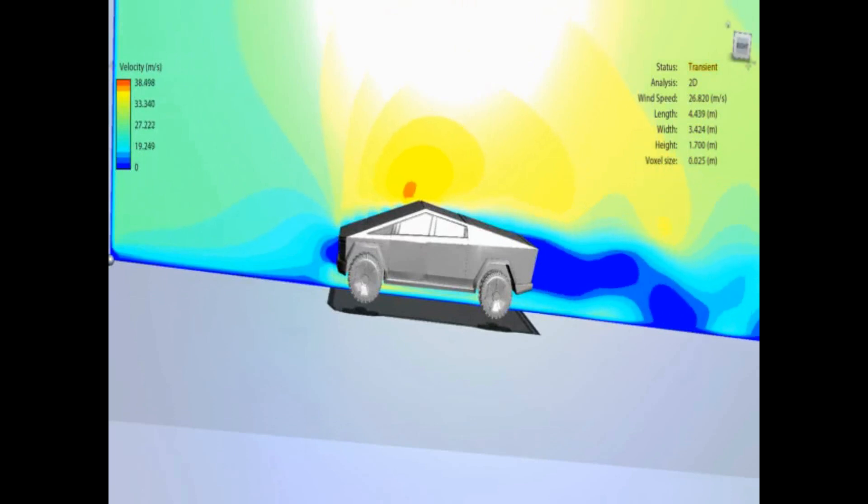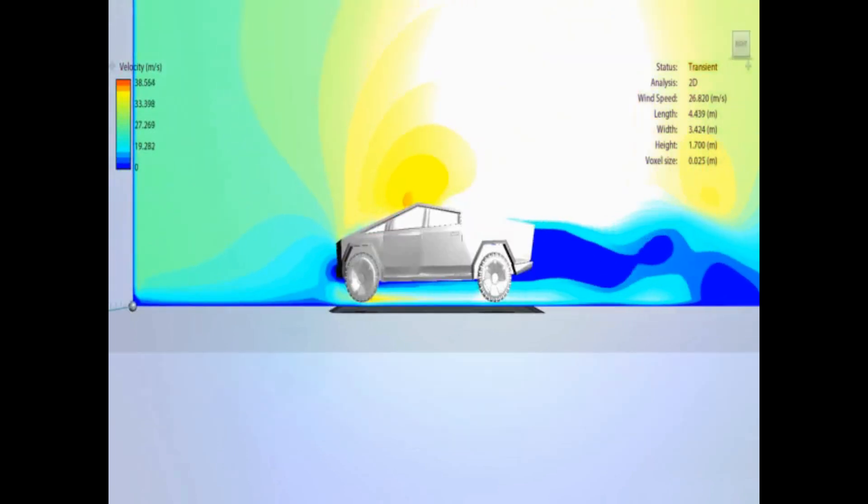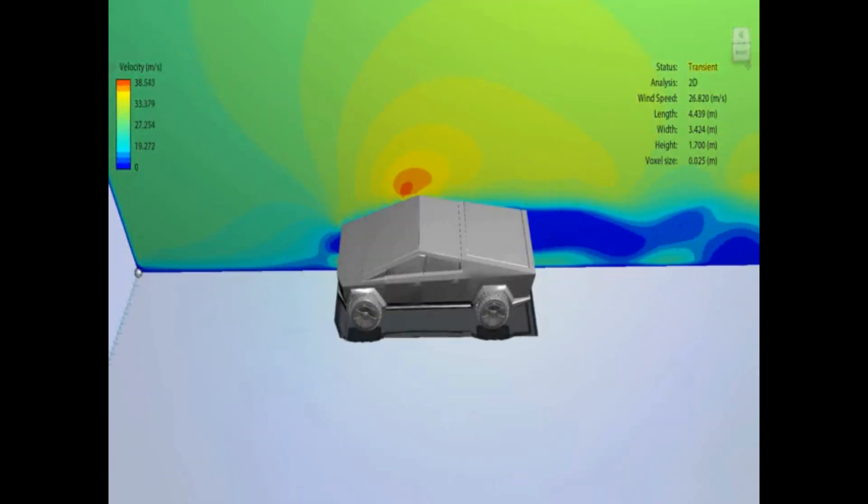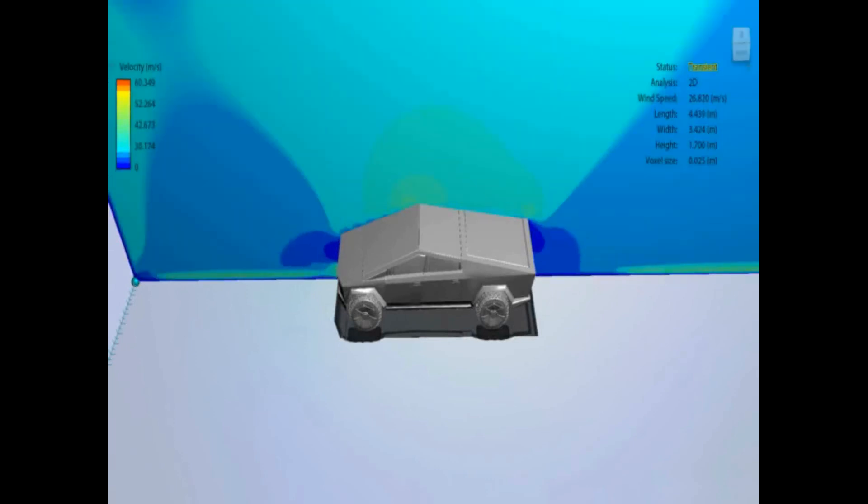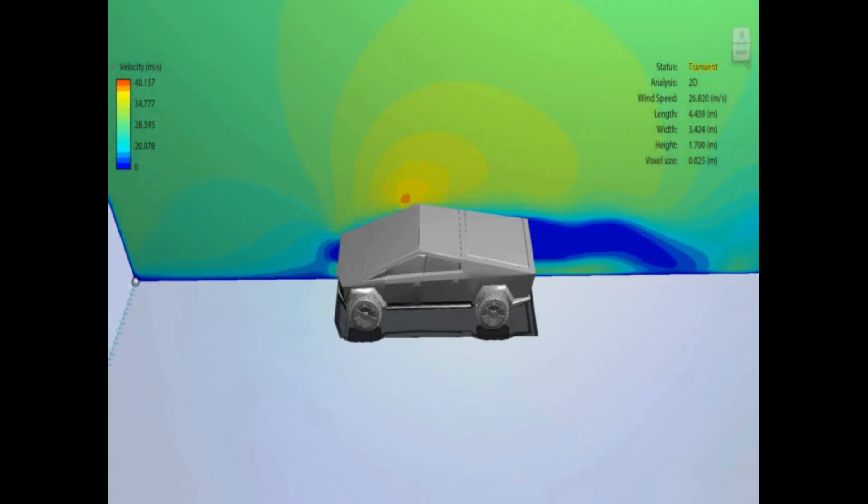Now we've jumped up to 26 meters per second, or 27, and that's 60 miles an hour. Just showing air velocity there, which is repositioning the analysis plane. And you can see, again, the vortex in front of the car.